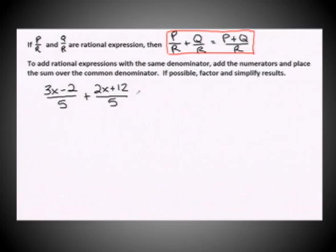Okay, so if we have the general case of P over R and Q over R as being rational expressions, then when we add those rational expressions, P over R plus Q over R, we just follow the steps. You simply combine those numerators over the common denominator.